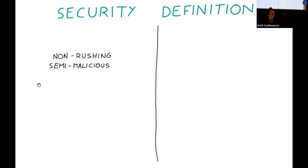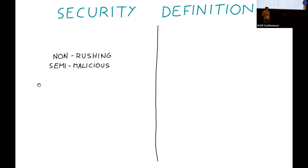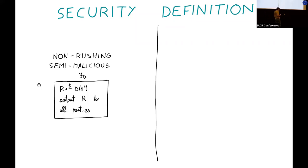We consider two security settings. The first one is against non-rushing semi-malicious adversaries. A semi-malicious adversary is like a semi-honest one — it has to follow the protocol — but it can also choose the random tapes of the corrupted parties as it likes. Since this adversary is non-rushing, the choice of the random tapes has to be made before the messages of the honest players are delivered. In this setting, the functionality implemented by distributed samplers is simple: it just generates a sample from the distribution and outputs it to all the parties, including the corrupted ones.